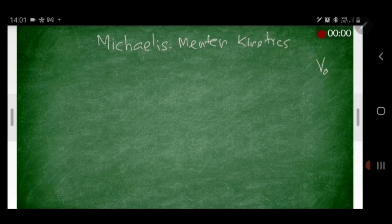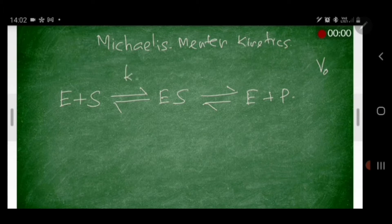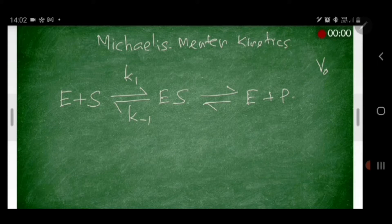If you take a reaction where the enzyme catalyzes a particular reaction, according to this mechanism, the reaction could be represented as: E plus S gives ES, which dissociates to give E plus P. Here, E represents enzyme, S represents substrate. The rate constant is K1 for the forward reaction, forming the enzyme-substrate intermediate, and K minus 1 for the reverse reaction.